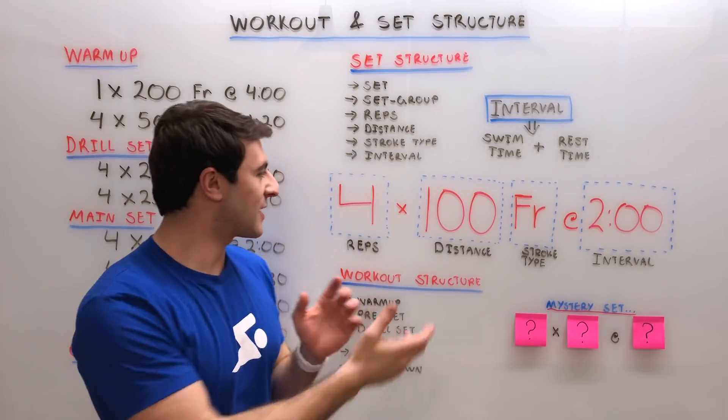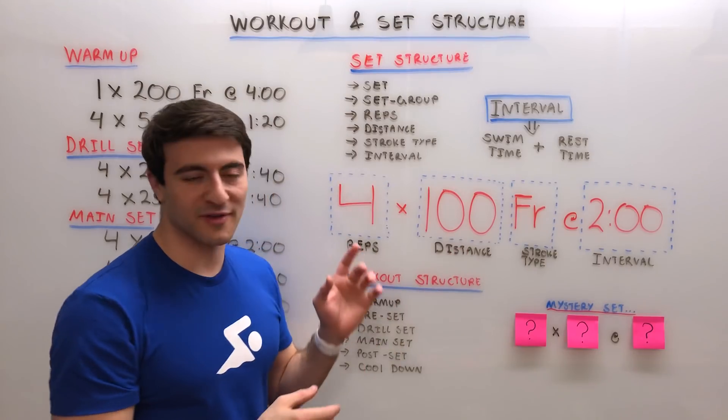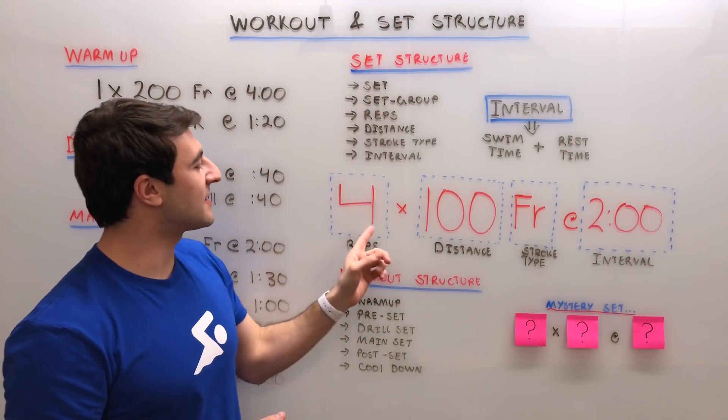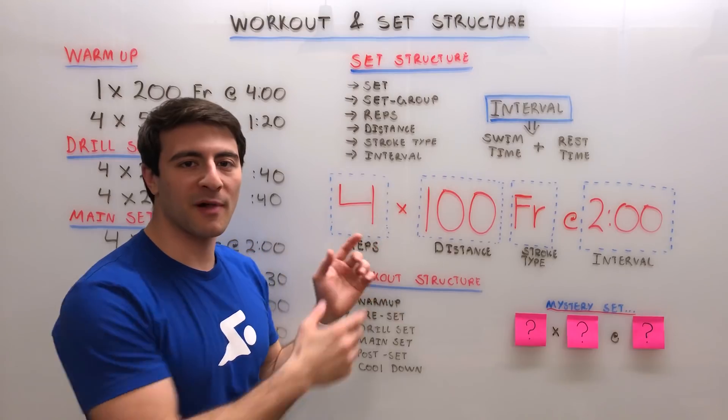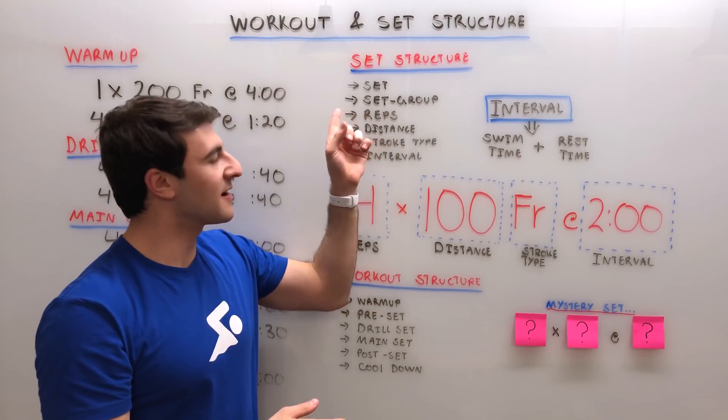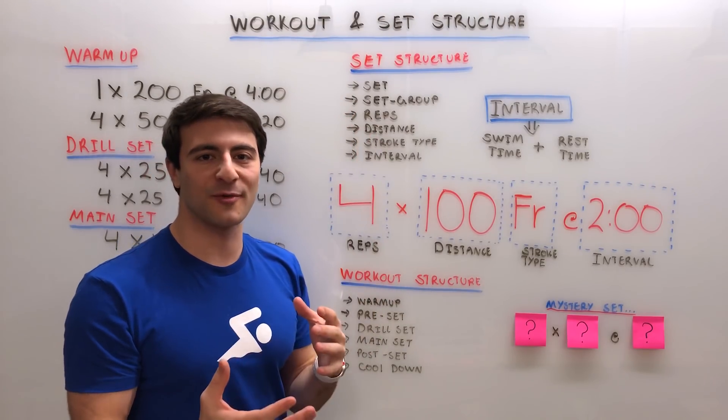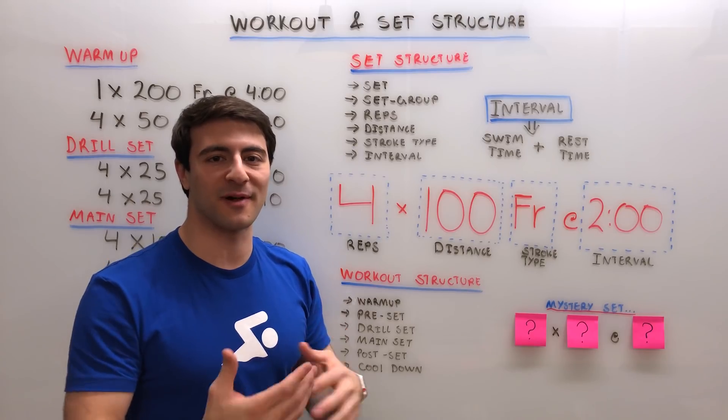A set, which we have an example here that we'll talk about in a bit, is broken up into each component, and multiple sets will create a set group. A set group is essentially a collection of multiple sets.